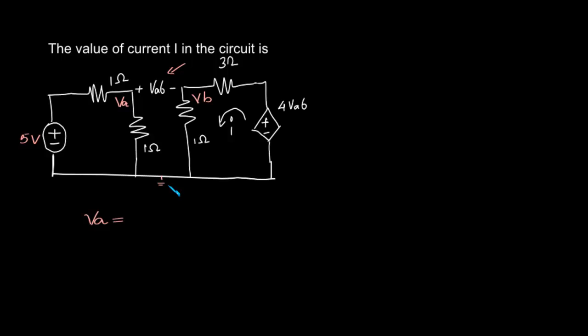Assume this node to be at zero potential. So VA equals 5 divided by 1 plus 1, there is 2 ohms, times 1. That is the voltage divider rule, which gives 2.5 volts.